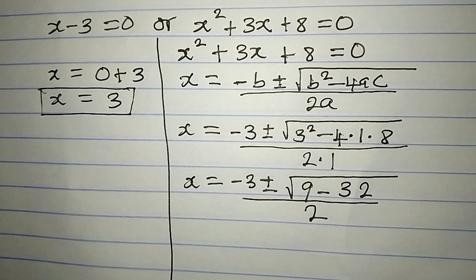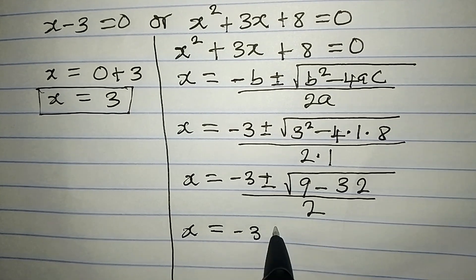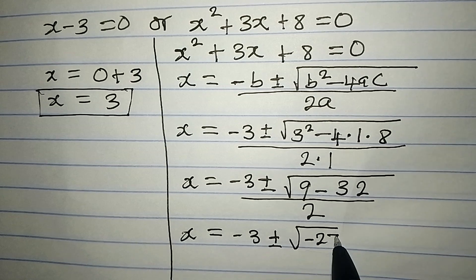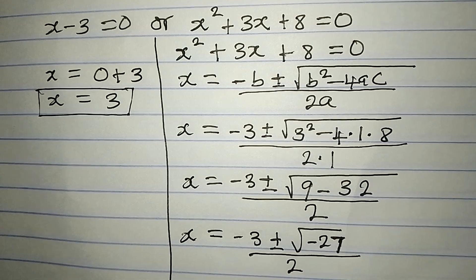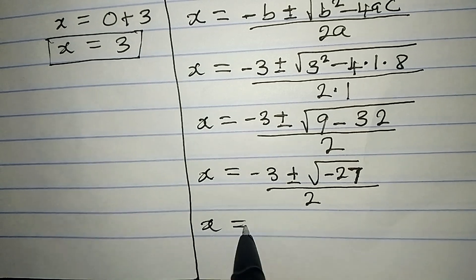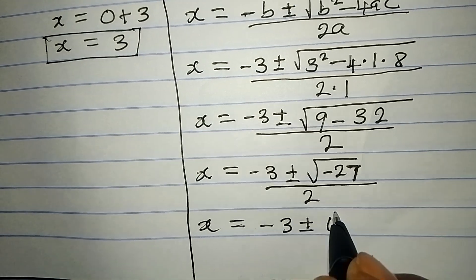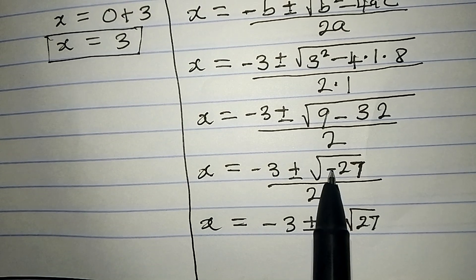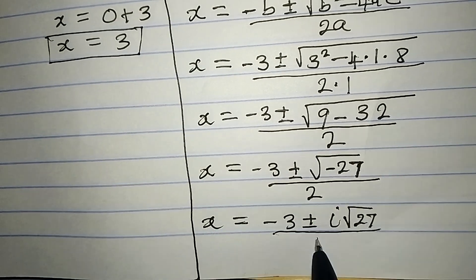Continuing, x equals minus 3 plus or minus the square root of minus 27, all over 2. Now the square root of minus 27 is i times the square root of 27, so the negative comes out in the form of i, which is imaginary. We now have x equals minus 3 plus or minus i root 27, all over 2.